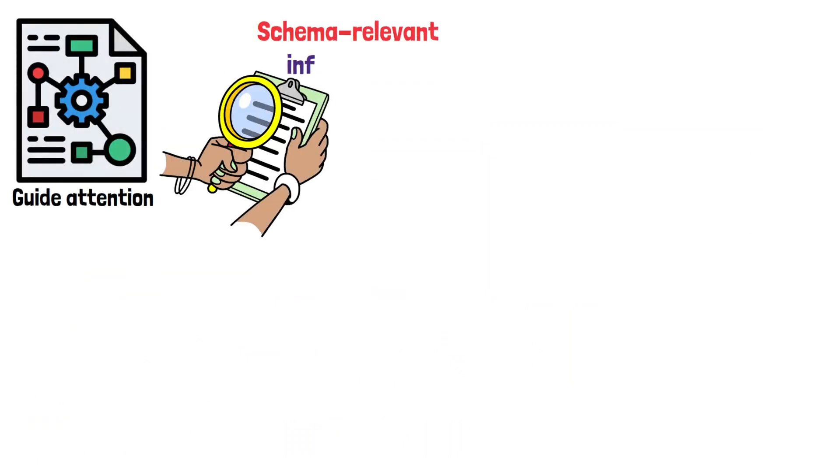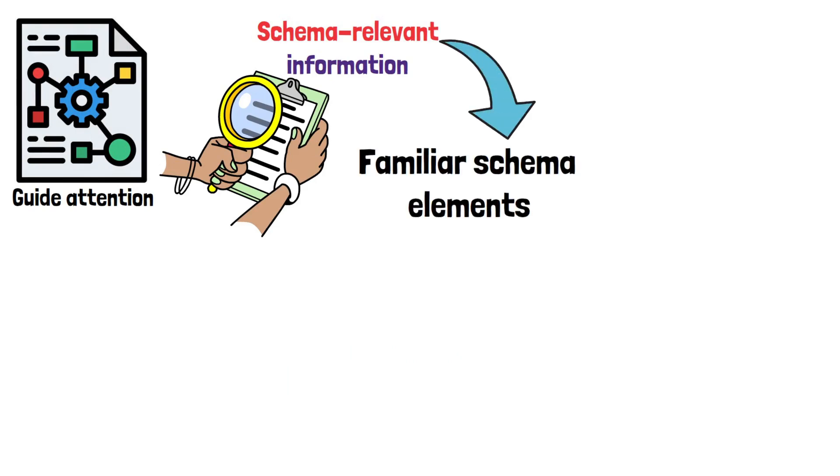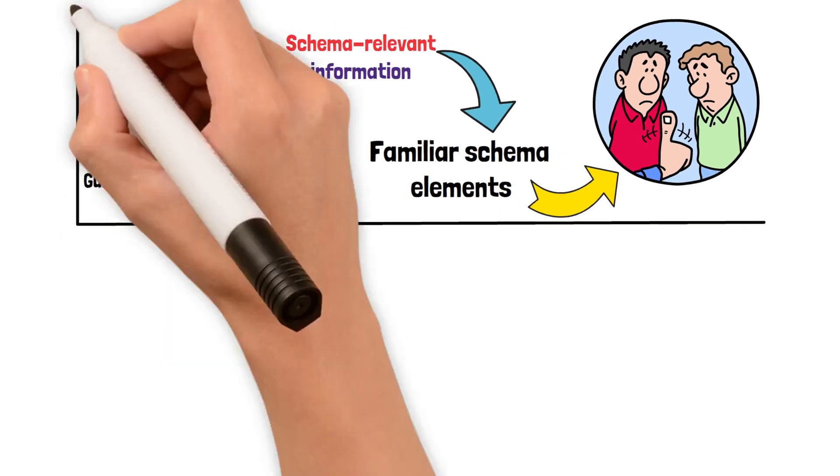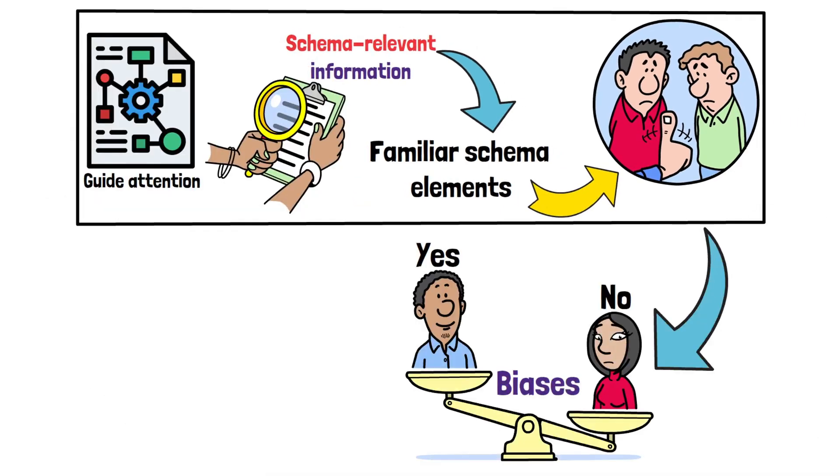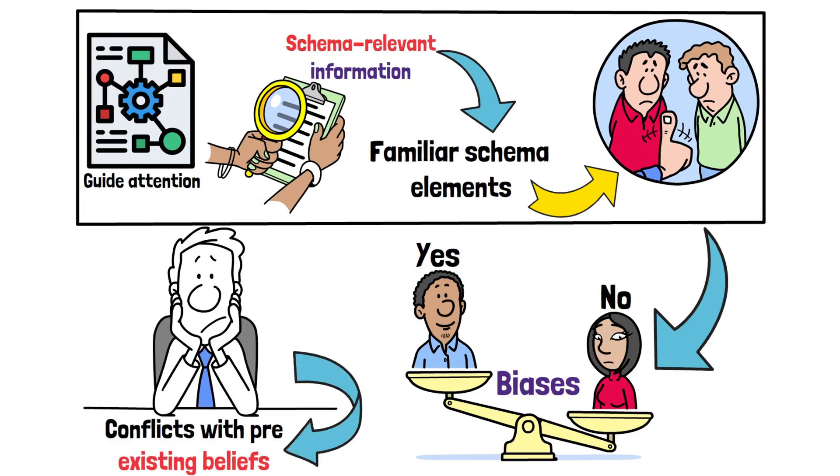Schemas also guide attention, focusing on schema-relevant information. This selective attention means that familiar schema elements are noticed, while others may be ignored. This mechanism can lead to biases, as schemas make individuals less likely to notice information that conflicts with pre-existing beliefs.